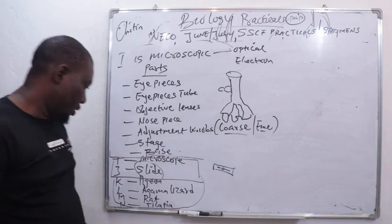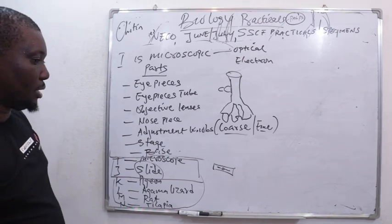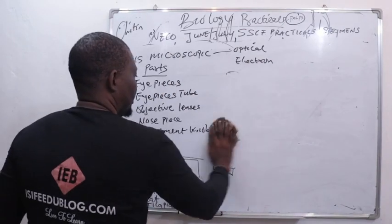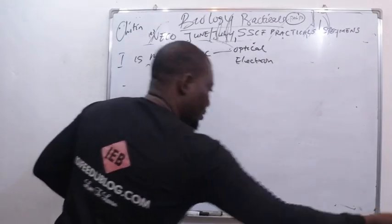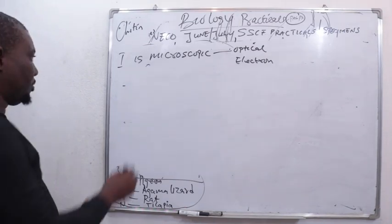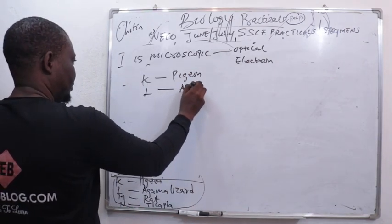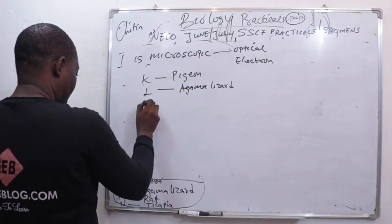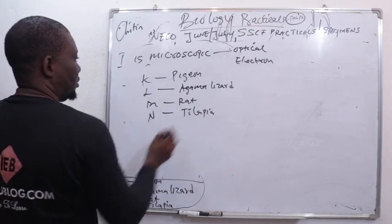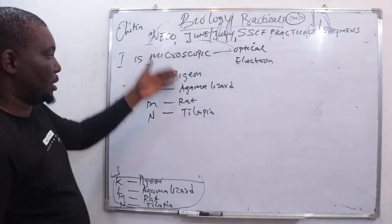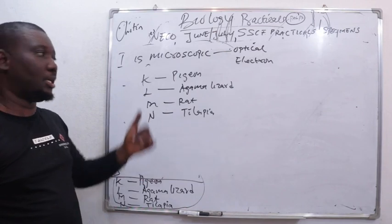Lastly in this video, we're going to look at specimens K, L, M, and N. Specimen K is pigeon, specimen L is agama lizard, specimen M is rat, and N is tilapia. We're looking at them on the same page because they belong to the class of vertebrates, animals with backbone.